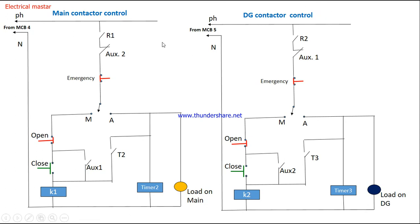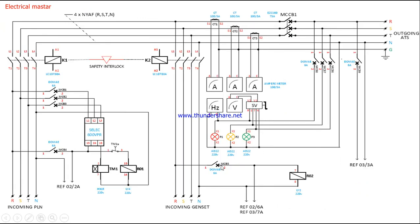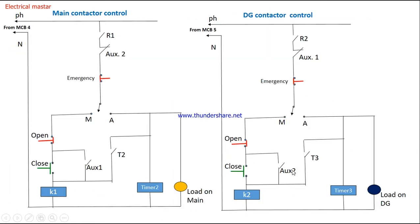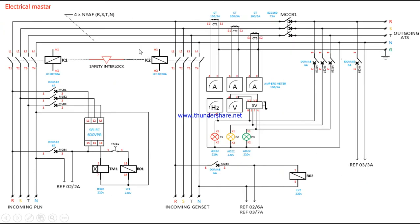For the DG contactor, from MCCB5 being closed, R02 is energized and R02 NO closes. It is connected to the NC contact of auxiliary 1 — the interlock for contactor K1 — so K1 must be off before we can close DG contactor K2. From the NC of K1 it goes to the emergency stop push button, then to the manual/auto selector switch. In manual mode, the stop and start push buttons control K2 — pressing start activates K2 and the holding contact closes. In auto mode, timer 3 activates; after its delay, T3 closes and supply extends to K2, which picks up and indicates load on DG.